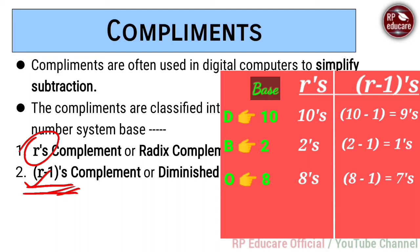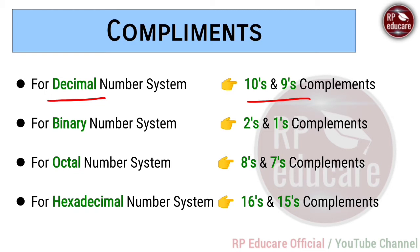In hexadecimal, r means base value is 16, so r = 16. Hexadecimal r's complement is 16's complement, and hexadecimal r-1's complement is 15's complement (16-1=15). To summarize: decimal — 10's complement and 9's complement; binary — 2's complement and 1's complement; octal — 8's complement and 7's complement; hexadecimal — 16's complement and 15's complement.